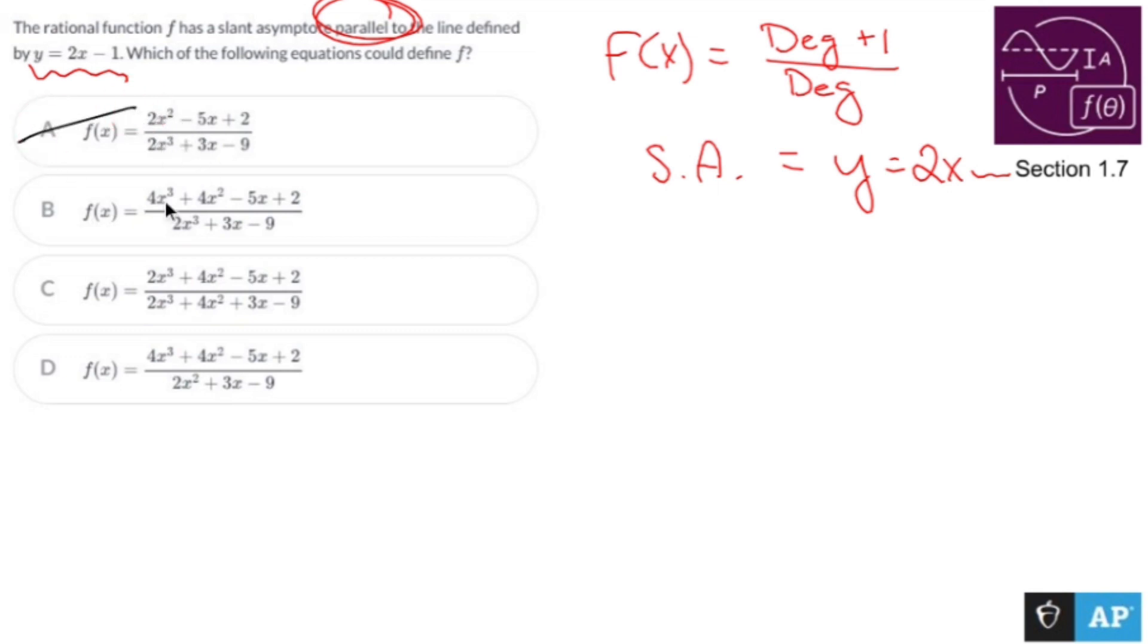you have a smaller degree than that, no good. You have a degree of 3, you have a degree of 3, no good. You have a degree of 3, you have a degree of 3, no good. You have a degree of 3, you have a degree of 2, it must be you.